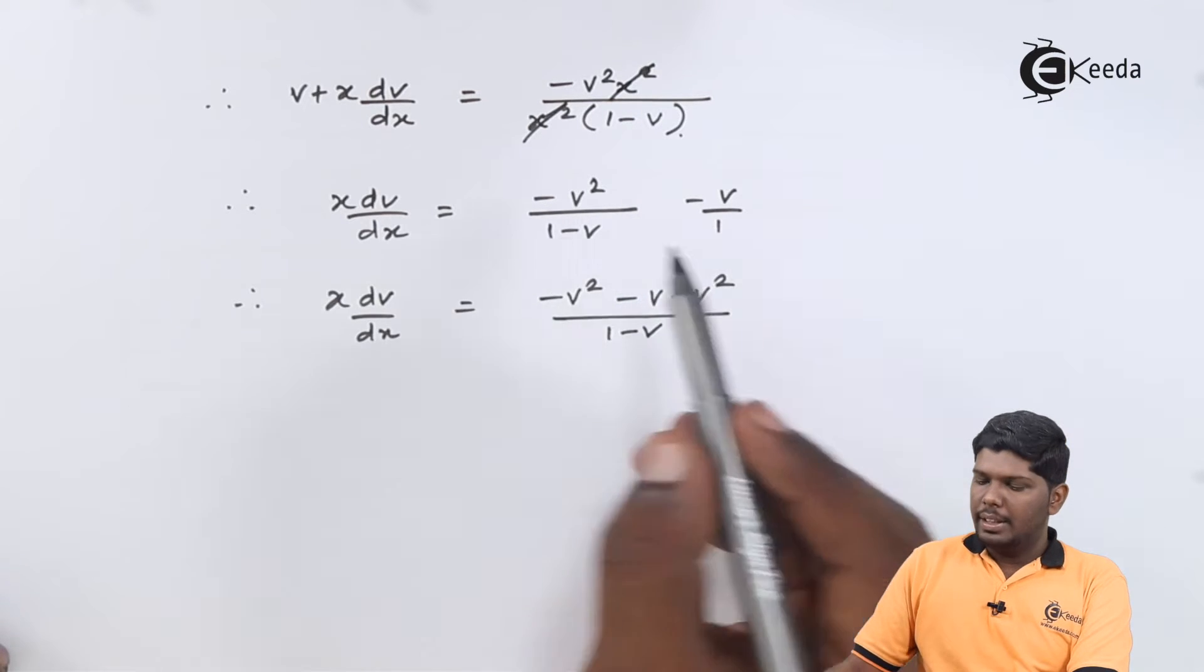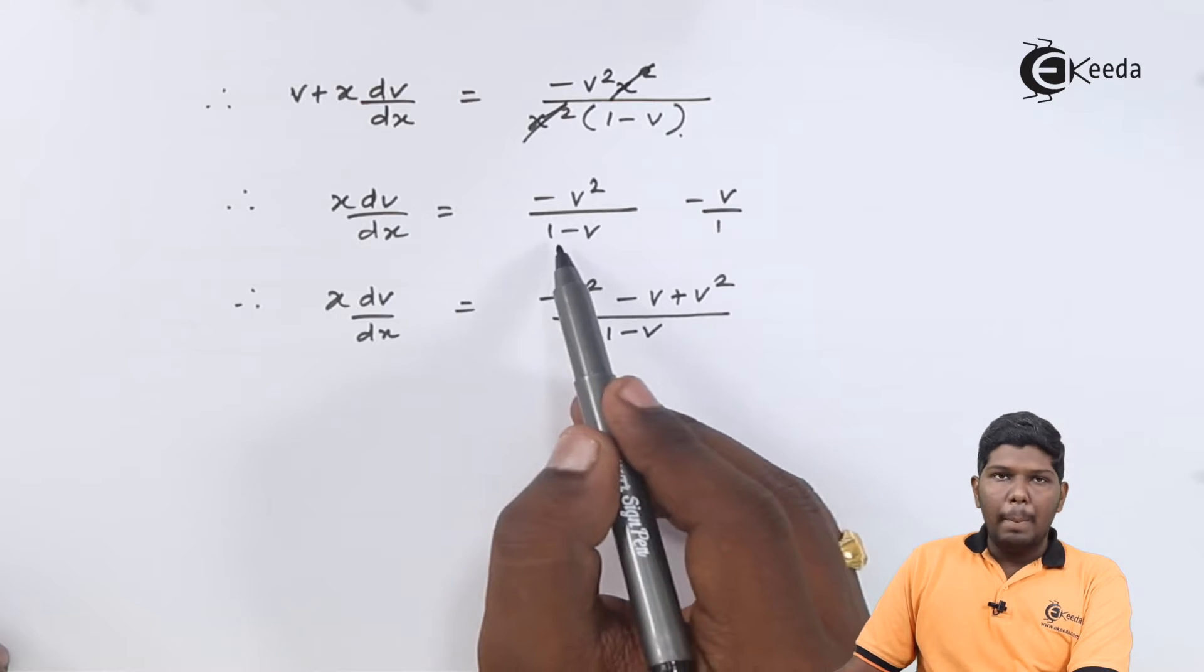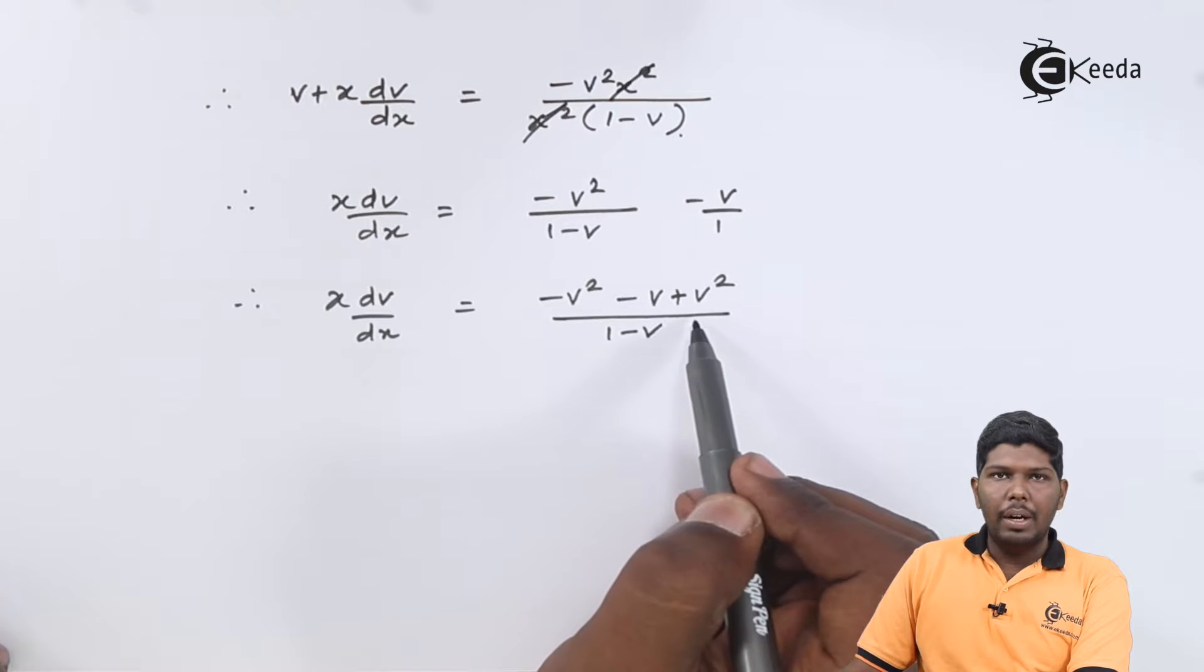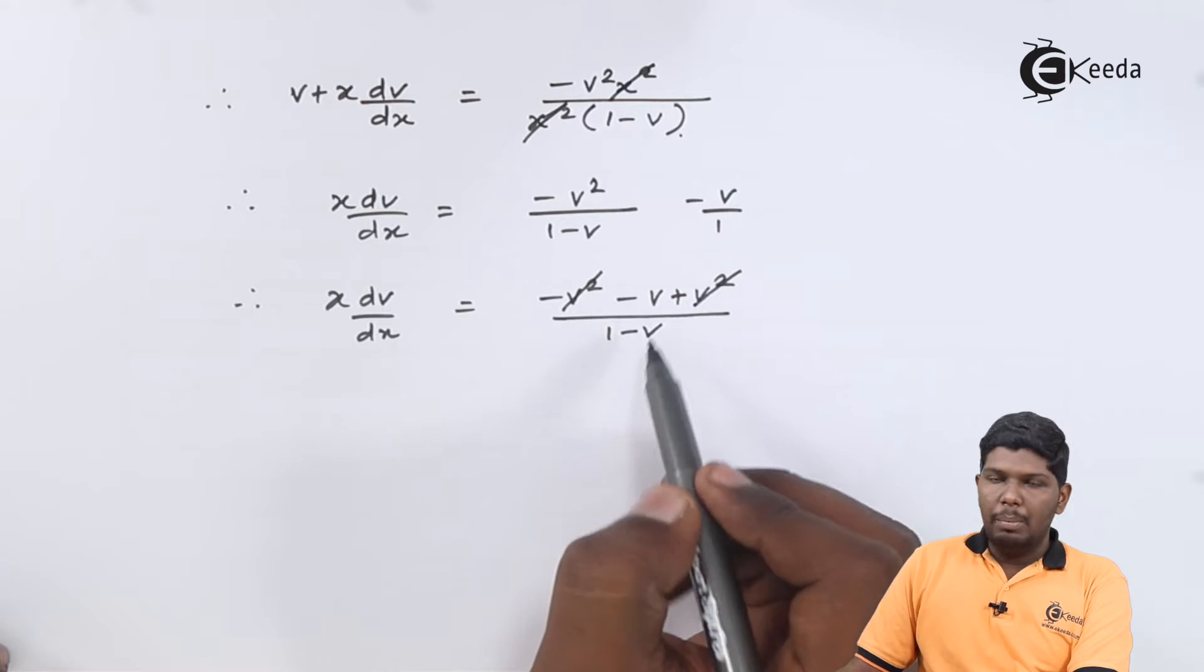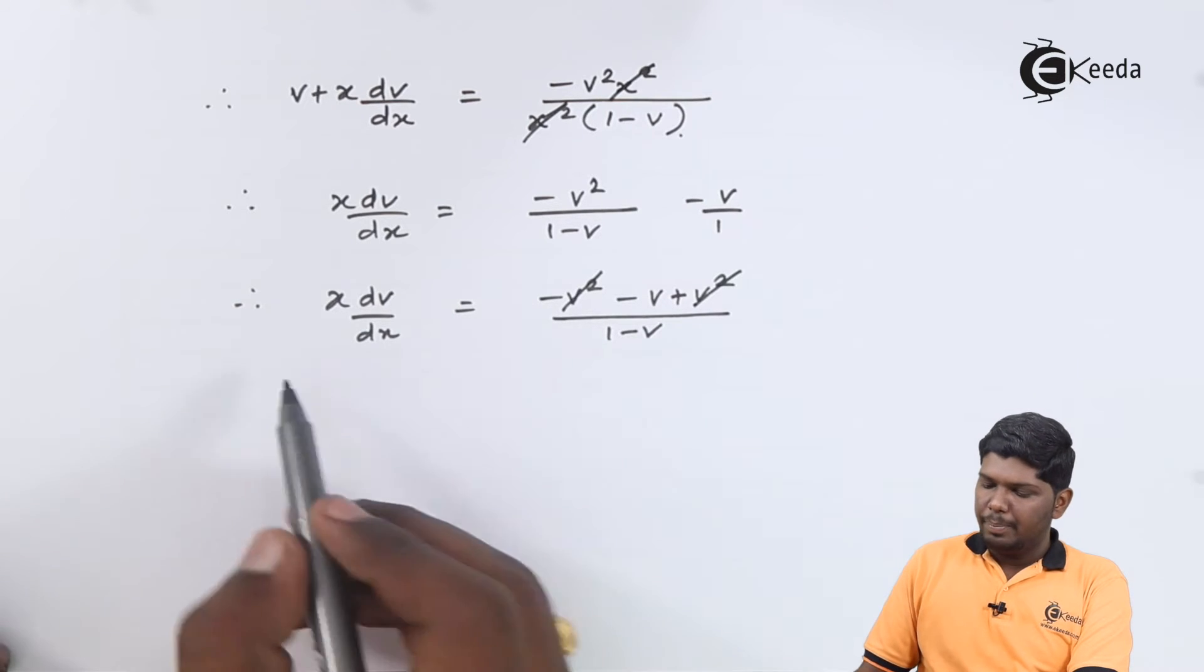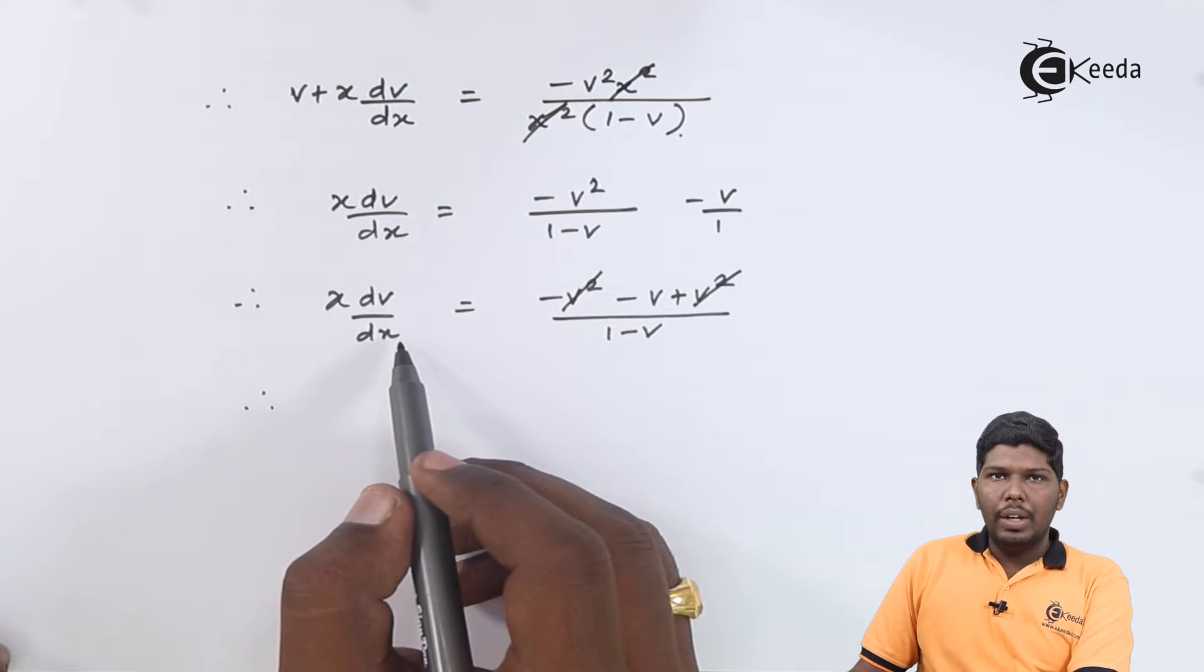On solving these two fractions we have minus v squared minus v plus v squared divided by 1 minus v, where v squared will be cancelled and the remaining part will be minus v upon 1 plus v. And after separating the variables,